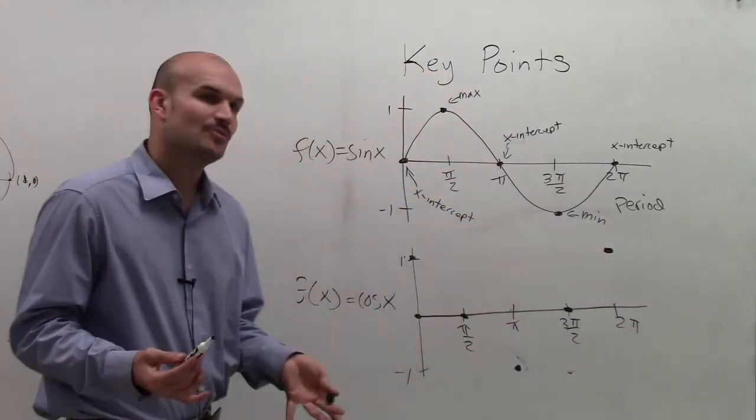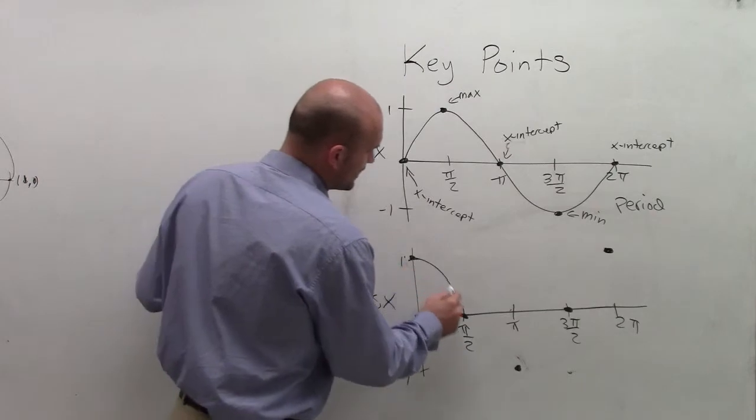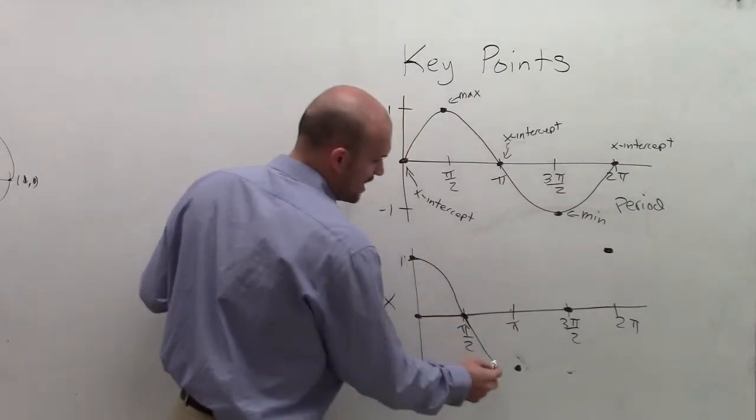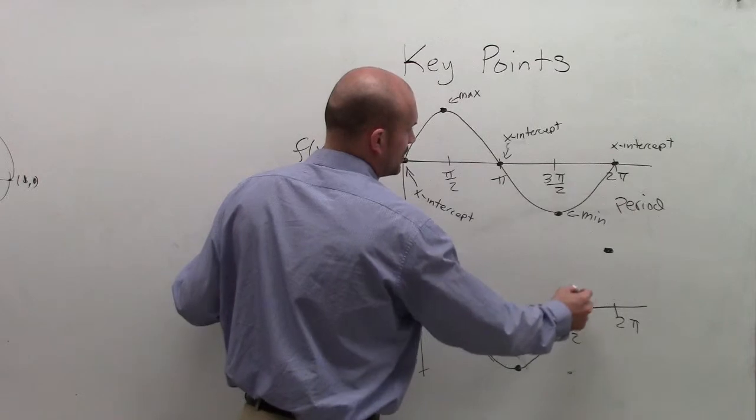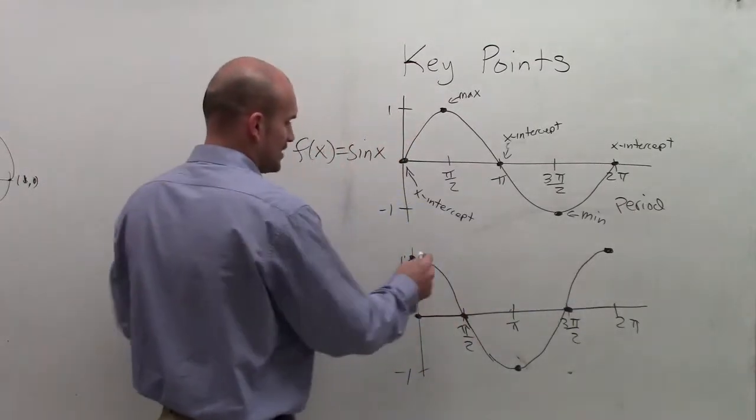So in graphing the key points here, we're going to connect and we're going to see it crosses at π/2. It has a minimum value, another intercept, and then a maximum value.